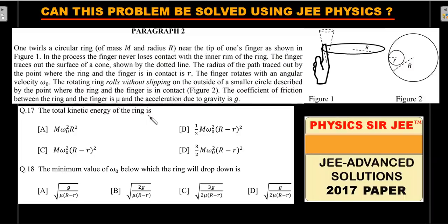There are two questions. First: the total kinetic energy of the ring — choose from four options. Second: the minimum value of omega-naught below which the ring will drop down — again, four options. I'd request you to pause the video if you are new to this question, give it a try for five to ten minutes, then come back for the concepts, the final key, analysis, and practice problems.